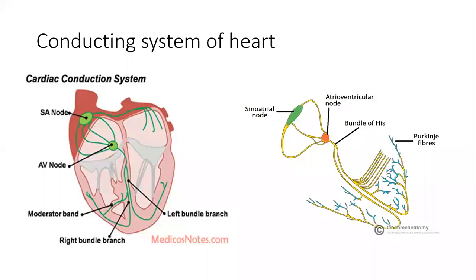The left bundle branch's Purkinje fibers stimulate the interventricular septum, the anterior and posterior papillary muscles, and the wall of the left ventricle. The moderator band connects the muscular part of the interventricular septum via the right bundle branch to the anterior papillary muscle. This pattern is absent in the left ventricle, where it is replaced by the six smaller tracks. This is an important gross anatomical difference between the two ventricles: the moderator band is present in the right ventricle but absent in the left.